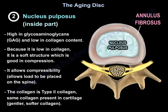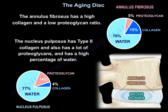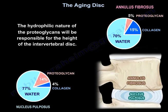The type 2 collagen in the nucleus pulposus is the same collagen present in cartilage — it is not tough collagen, but gentler and softer. The annulus fibrosis has a high collagen and low proteoglycan ratio. The nucleus pulposus has type 2 collagen, a lot of proteoglycan, and a high percentage of water. The hydrophilic nature of the proteoglycan is responsible for the height of the intervertebral disc.